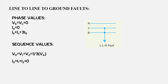Now let's finally discuss line to line to ground fault. Again, there are three lines: line A, line B, and line C. If there is a line to line to ground fault on line B and line C with ground, then the phase voltages of line B and line C will be zero, and the current flowing through the unfaulted line A will be almost equal to zero. For sequence values, the vector sum of all sequence current components will be zero, the sequence voltage components will be equal among themselves, and equal to one third of the voltage of the unfaulted line.